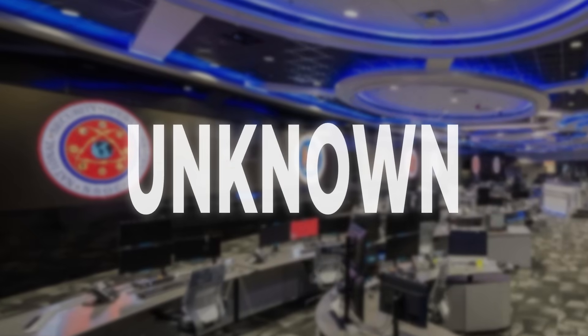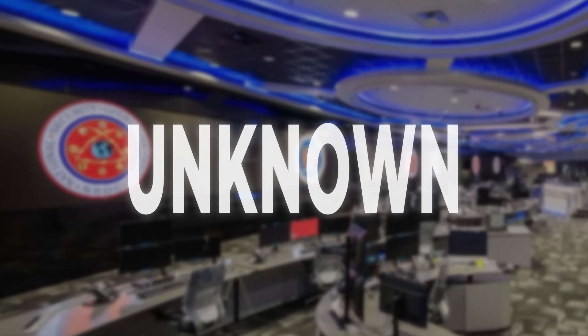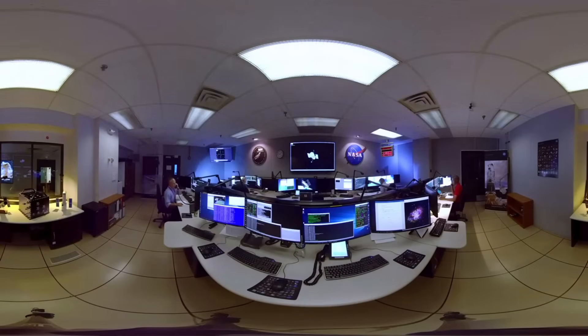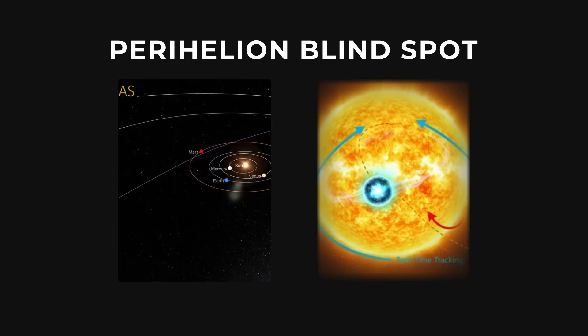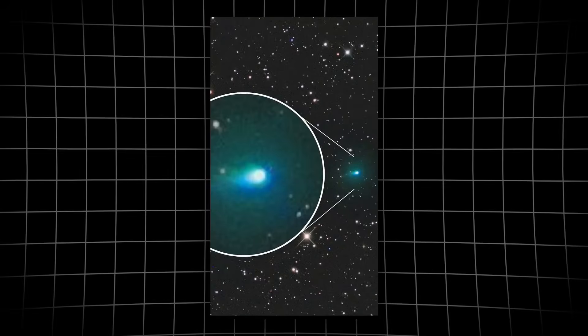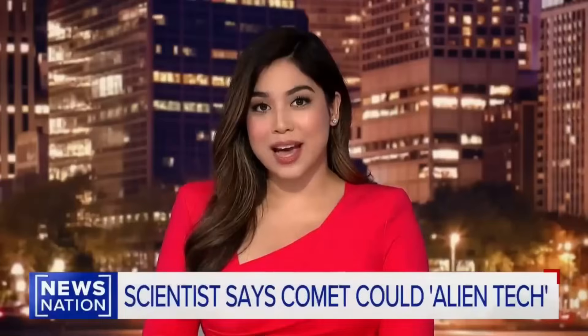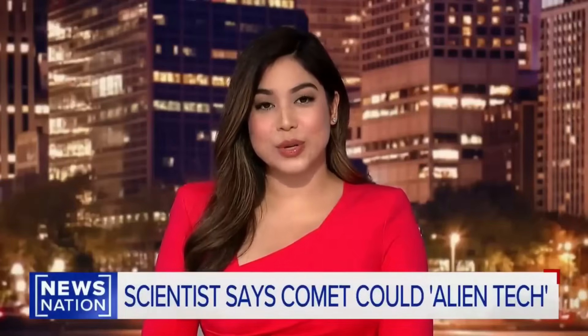As the object races through its solar slingshot, astronomers and planetary defense teams brace for the unknown. When 3i-Atlas reappears, its trajectory will tell the story. Did it follow the path predicted by physics, or did something unexpected happen while it was out of sight? The answer will come only after the blind spot closes, and the world waits for the first post-perihelion data.